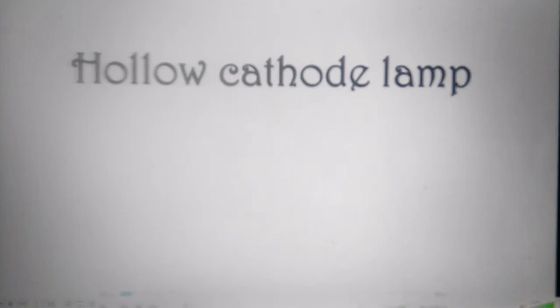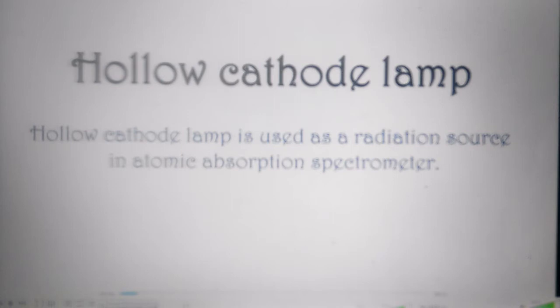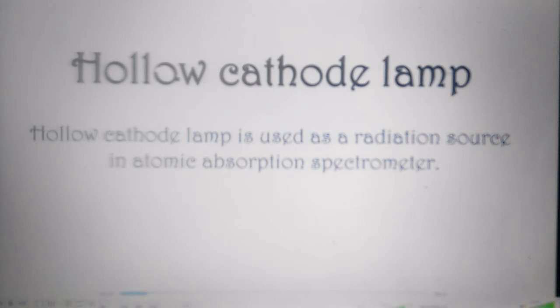Hollow cathode lamp is used as a radiation source in an atomic absorption spectrophotometer. Atomic absorption spectrophotometer is that instrument in which we measure the amount of radiation emitted from an atomic species.